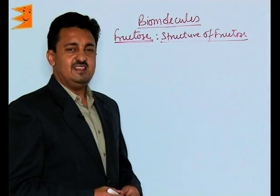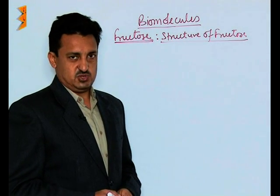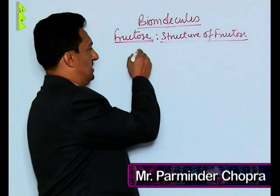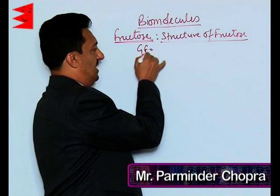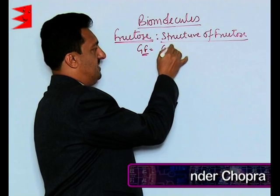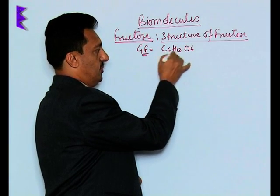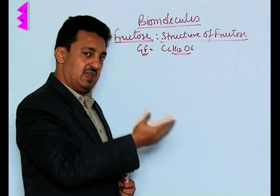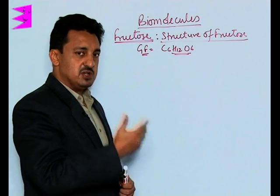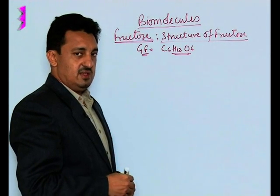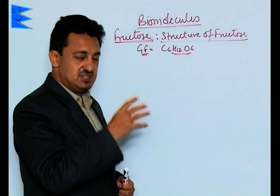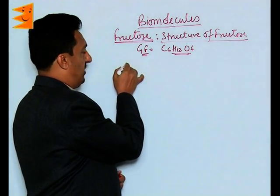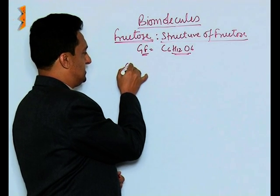Fructose is a monosaccharide with the general formula C6H12O6. After doing the same series of reactions, it was concluded that the spatial straight chain arrangement structure of fructose is as follows.